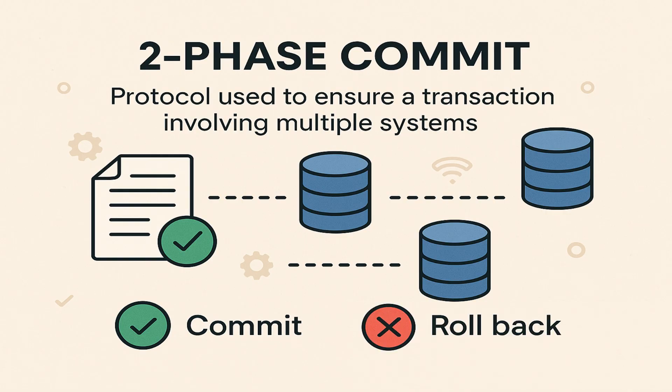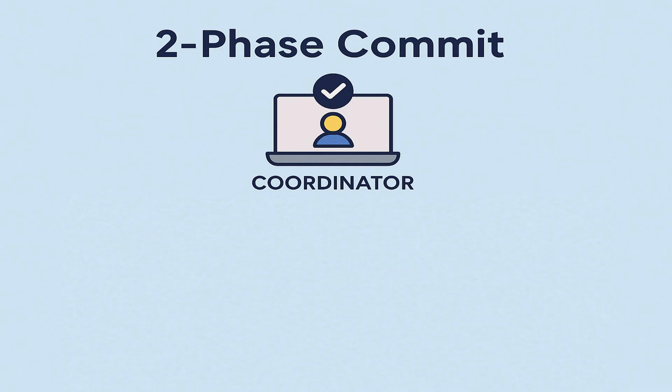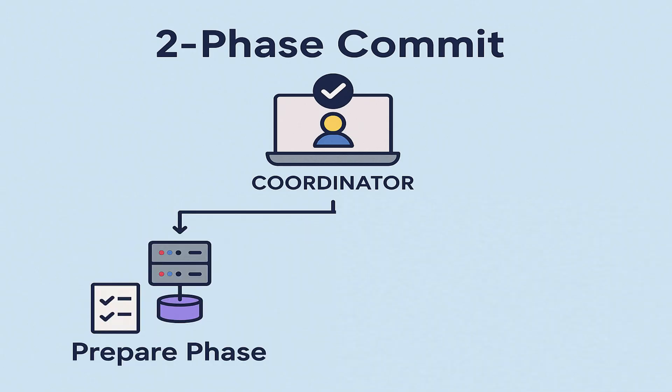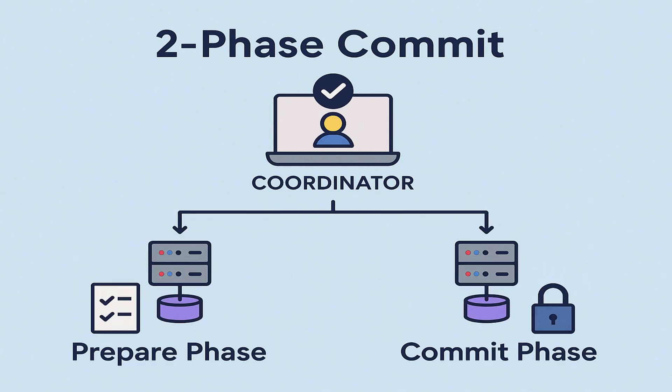It uses a central coordinator and follows two distinct steps: the first is the prepare phase and the second is the commit phase. Due to these two phases, this is known as two-phase commit. Now let's understand both of these phases in detail.